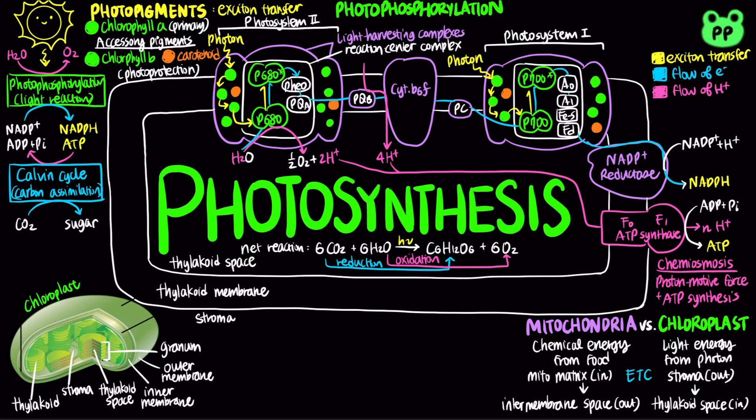Note that the yellow line indicates the transfer of exciton, the blue line indicates the flow of electrons, and the pink line indicates the flow of protons. As you can see from the blue line, electrons from the water molecule flow linearly to NADPH.